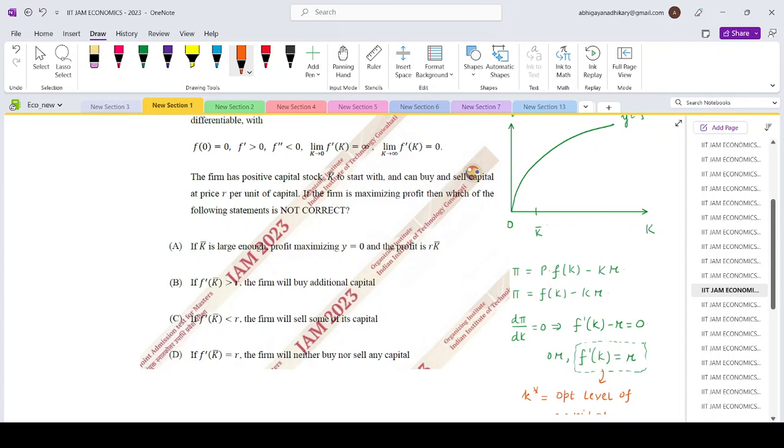So it will neither buy nor sell. So option D is the correct option. F prime K bar equals R, so the firm will neither buy nor sell any capital. If at this level of K bar, if at this level of capital at which your condition is satisfied, then the firm will neither buy nor rent capital.